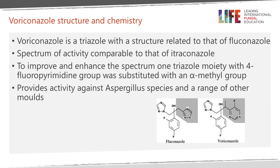Looking at voriconazole's structure and chemistry, voriconazole is a triazole with a structure related to fluconazole. Its spectrum of activity is comparable to that of itraconazole, but to improve and enhance the spectrum, one of the triazole moieties was substituted with an alpha-methyl group, replacing a 4-fluoropyrimidine group. This means you get activity against Aspergillus species and a range of other moulds, so voriconazole can be used for many other fungal infections, not just Aspergillus.